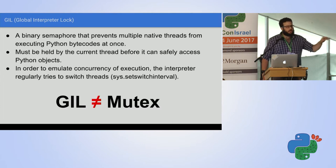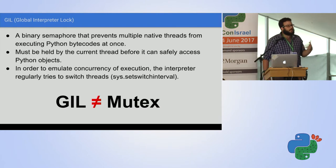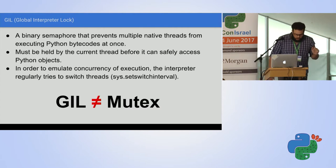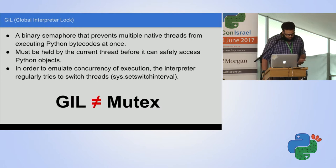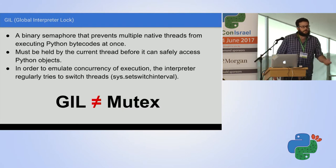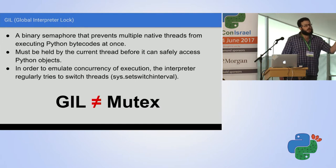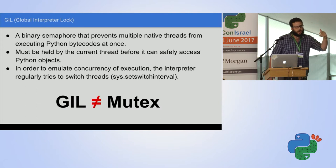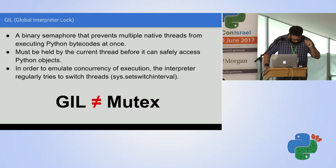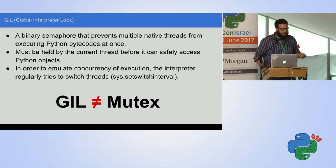To emulate concurrency, the interpreter regularly tries to switch threads. You can see the interval with sys.setswitchinterval. Many of you have heard about the GIL and a mutex - it's not a mutex, it's a binary semaphore. A mutex is mutual exclusion used to protect shared memory resources, while a binary semaphore is used for synchronization.